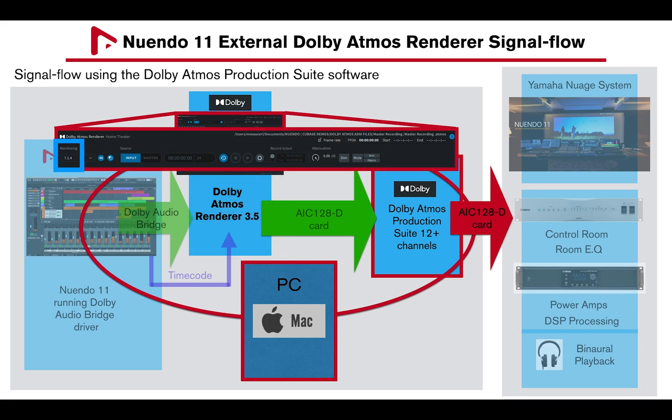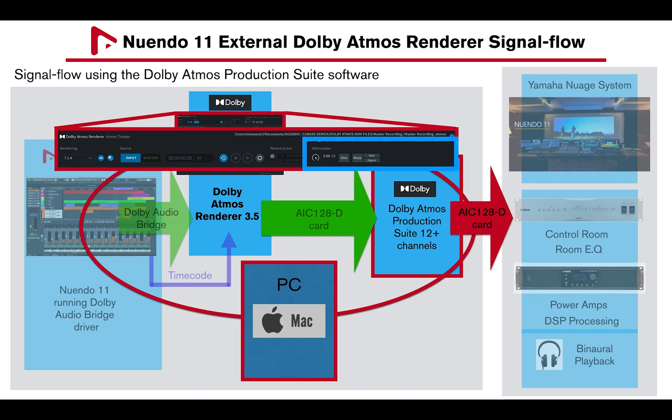The Dolby Atmos Renderer 3.5 offers down-mixing monitoring options. You can record and export a master file in different formats, including ADM-BWF, as well as punch in and out of a master recording. You can also attenuate or dim the monitor output level, as well as mute beds and objects independently or all monitor outputs.